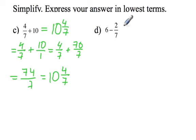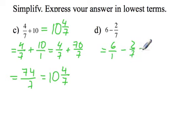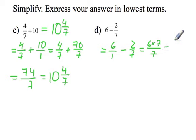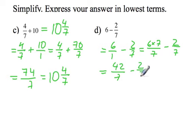For Question D it's going to be very similar, so we'll do the longer way first. 6 over 1 take away 2 over 7. We need a common denominator, so we will rewrite it as 6 times 7 over 1 times 7, take away 2 sevenths. 6 times 7 is 42, take away 2 sevenths, that equals 40 sevenths.